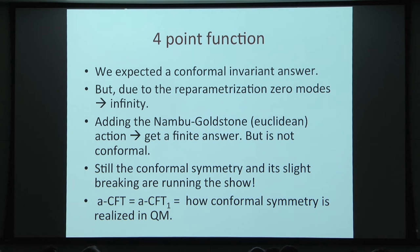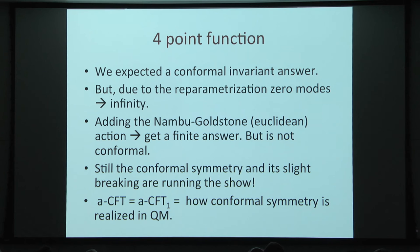The conformal field theory doesn't make sense on its own — this is different than in higher dimensions. In two or three dimensions, we can talk about a conformal field theory fixed point that is completely consistent and well-defined. Here the conformal theory is not consistent on its own — we would get infinities. What is consistent is this almost conformal theory, and this is how conformal symmetry is realized in quantum mechanical systems. People discussed other realizations of conformal quantum mechanics where systems realized only some SL(2,R) group with no sense of the full conformal group or all reparametrizations. Here there is some sense in which we have all the reparametrizations, but in a slightly broken phase.